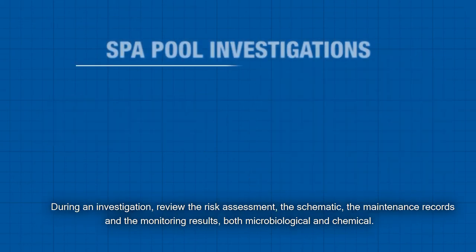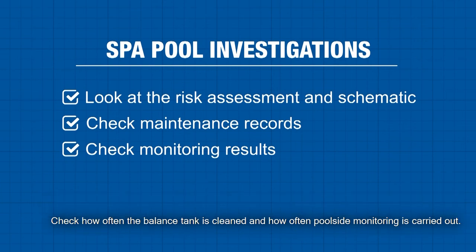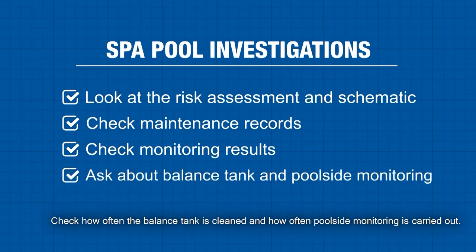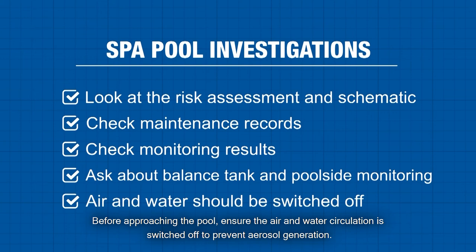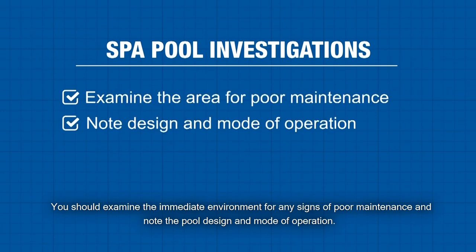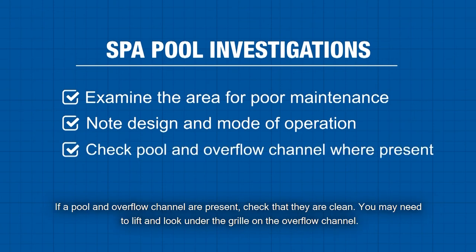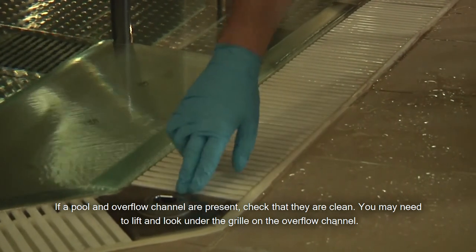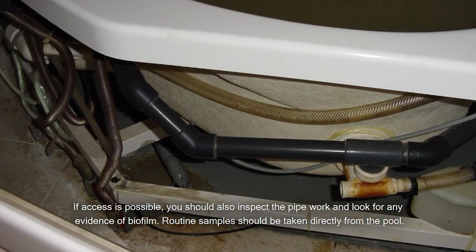During an investigation, review the risk assessment, the schematic, the maintenance records and the monitoring results, both microbiological and chemical. Check how often the balanced tank is cleaned and how often poolside monitoring is carried out. Before approaching the pool, ensure the air and water circulation is switched off to prevent aerosol generation. You should examine the immediate environment for any signs of poor maintenance and note the pool design and mode of operation. If a pool and overflow channel are present, check that they are clean. You may need to lift and look under the grill on the overflow channel. If access is possible, you should also inspect the pipework and look for any evidence of biofilm.